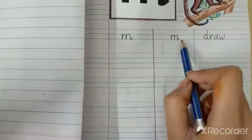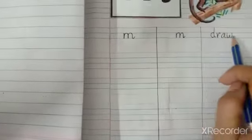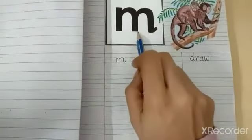Then draw a line, then again letter M, and you will draw a line again. And you will write draw. Okay, and over here you can draw any pictures coming from letter M.